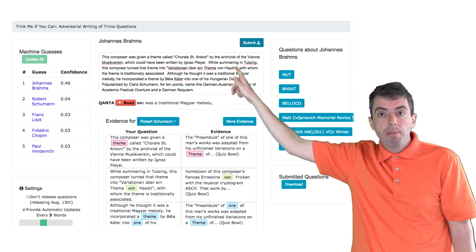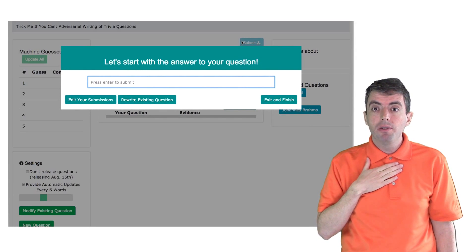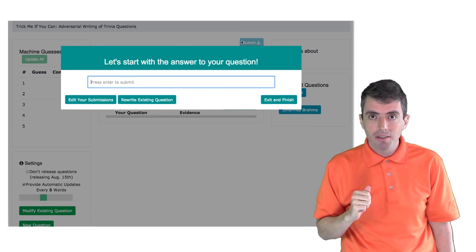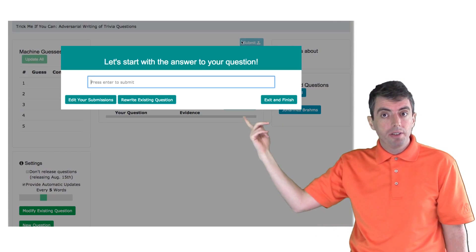When you're done, hit the submit button at the top of the screen. That sends the question to us so that we can use it to help improve machine learning and artificial intelligence. And then the process starts all over again. You can start typing in the answer to the next question.